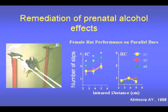One important area of treatment is using motor training to compensate for some of the deficits resulting from prenatal alcohol. Motor deficits, balance problems, and gait anomalies are common in children with FAS. Complex motor training can mitigate the effects of developmental alcohol exposure on motor coordination and on cerebellar structure. Shown here is the parallel bar motor task, which measures the rat's balance and fine motor coordination. The graphs illustrate the number of slips or falls on the parallel bars, an indicator of motor dysfunction.